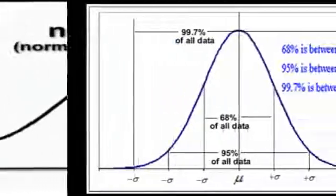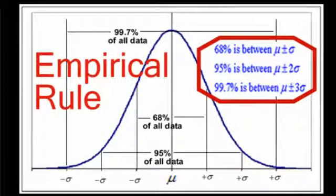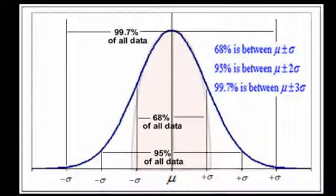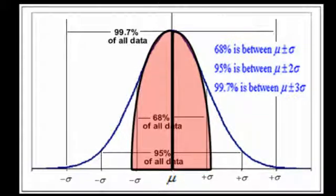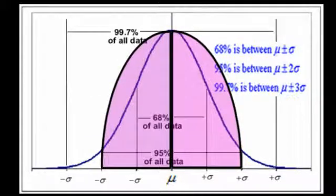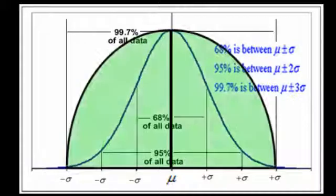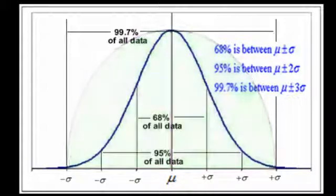Your standard deviations allow for 68% of the information or the data points to fall within plus or minus one standard deviation, 95% of your data to fall in between plus or minus two standard deviations, and lastly, 99.7% of your data fall in between plus or minus three standard deviations.